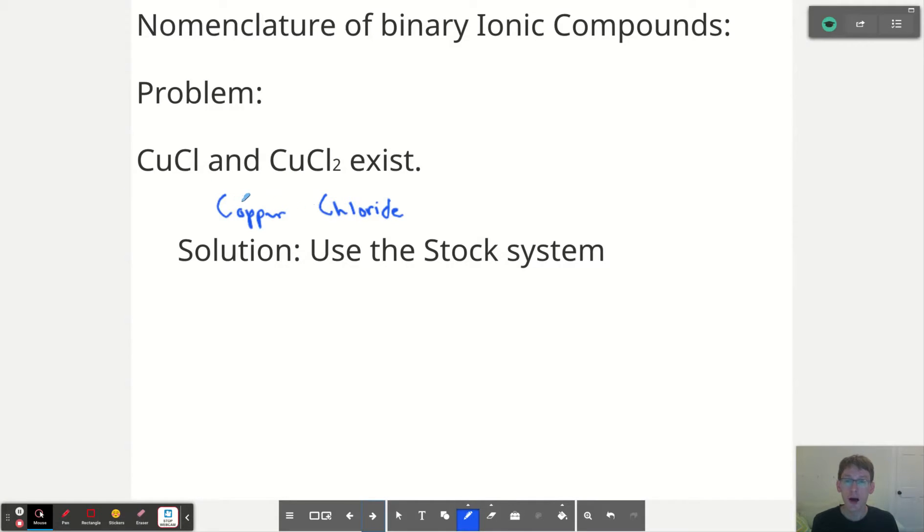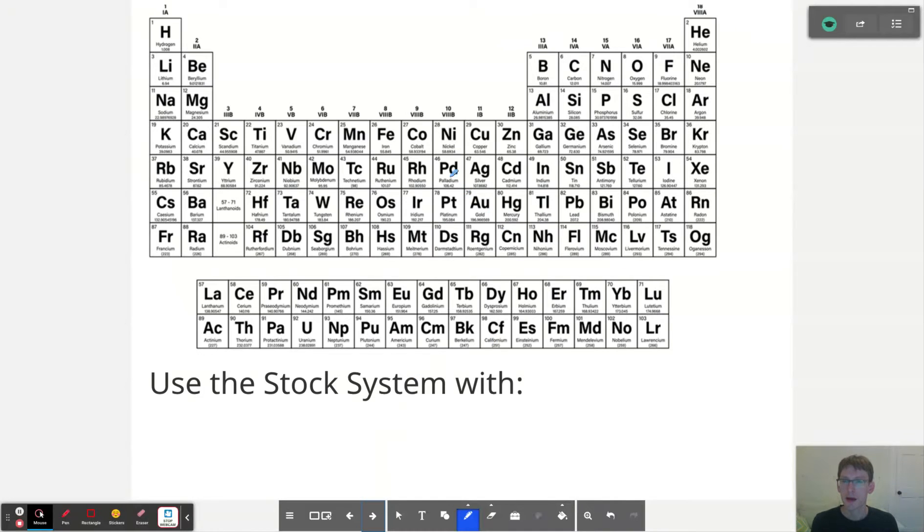It's not like a group one or a group two ion where you know it's going to be positive one always or positive two always. So we have to use what's called the stock system to clarify whether I'm talking about copper one chloride, which is this one, or copper two chloride if I'm talking about this one. Well, let's learn about that a little bit more here.